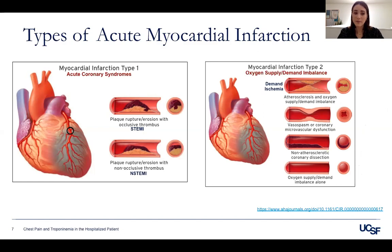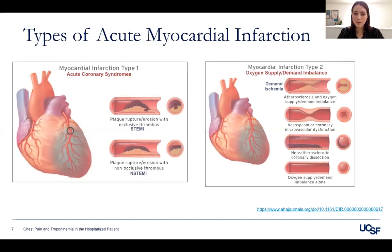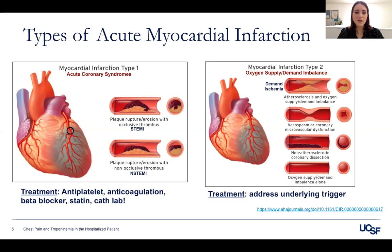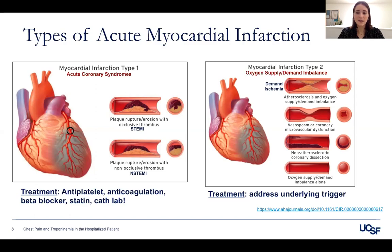These patients may not have any symptoms, or they may just have symptoms of their underlying illness. This is important because treatment is very different. For type 1 MI, you do the full ACS treatment: antiplatelet therapy, anticoagulation, beta-blocker, statin, and calling the cath lab if appropriate. For type 2 MI, you're really just addressing the underlying trigger — treating the sepsis causing tachycardia, for example.